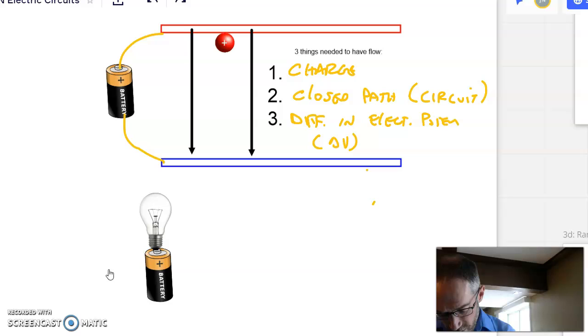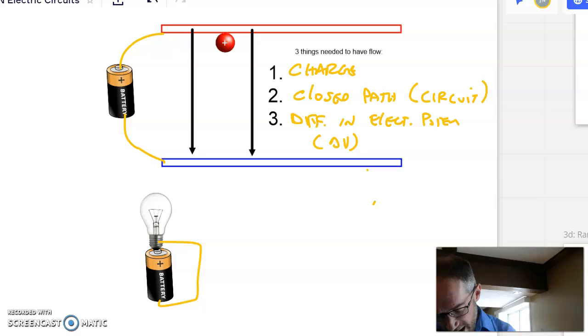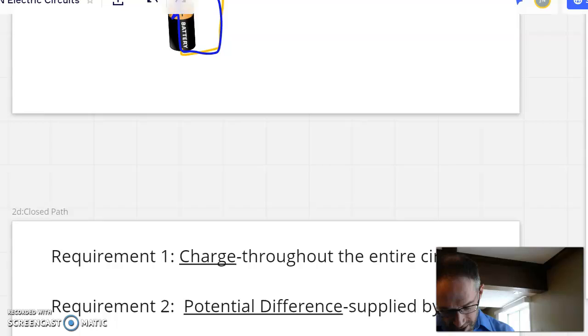Now, what would happen is, I would have a conducting path from positive through the bulb filament, very important, and then down the wire and then back like this. So that requirement number one, the charge.